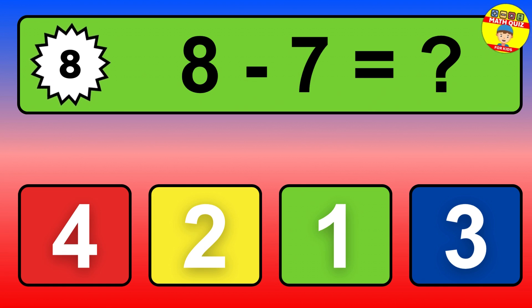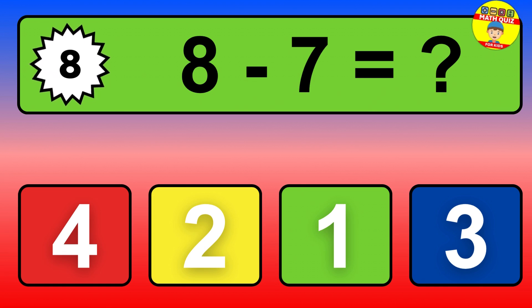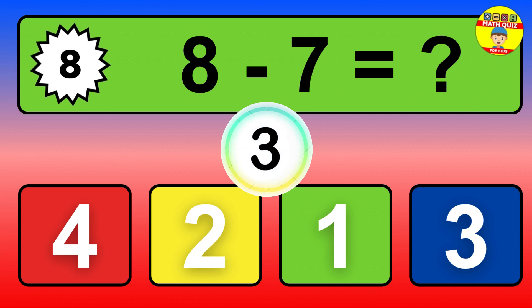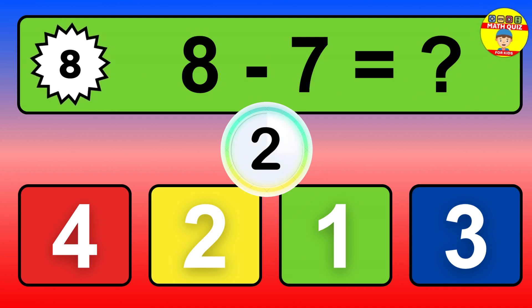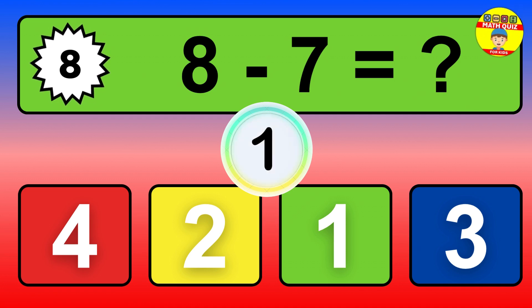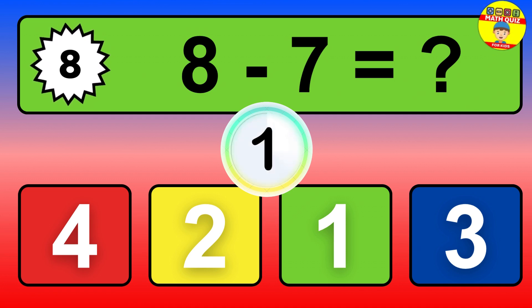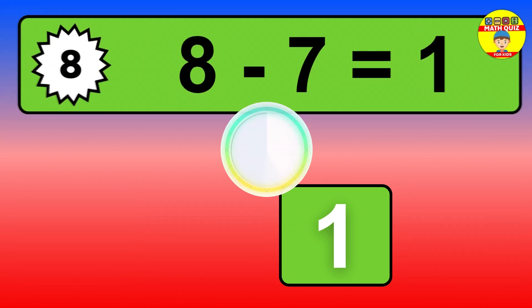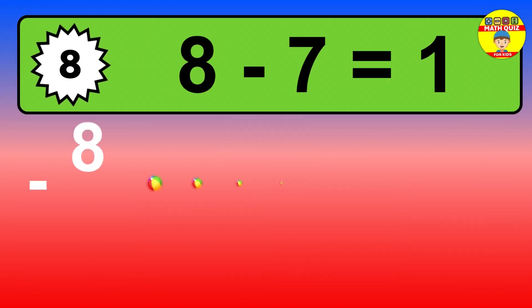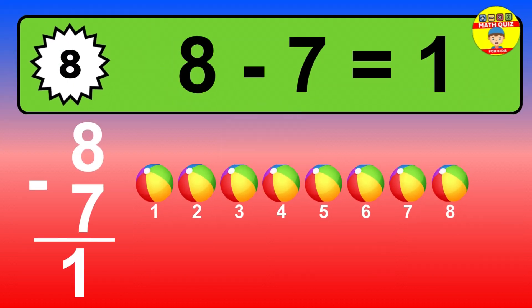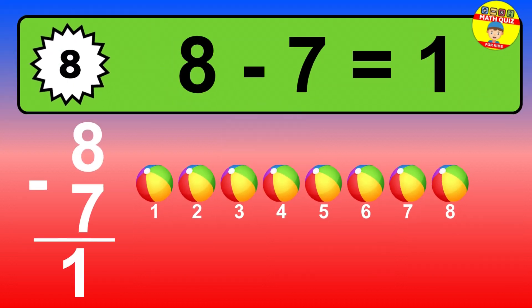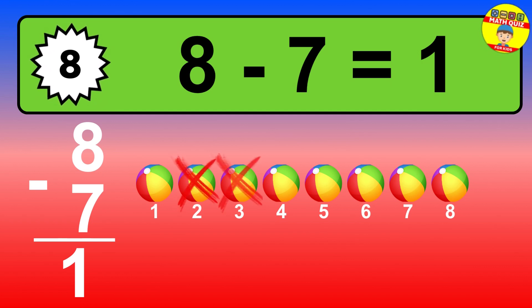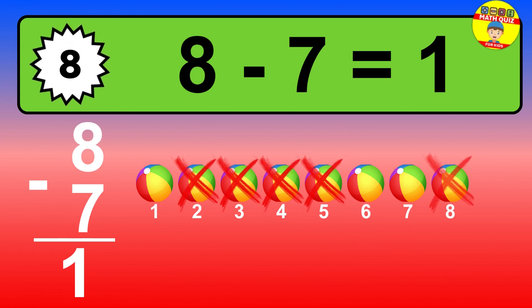Question 8. 8 minus 7 equals what? So the answer is 8 minus 7 is 1. Let's count it. 1.